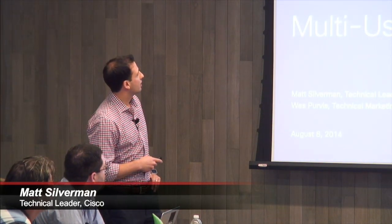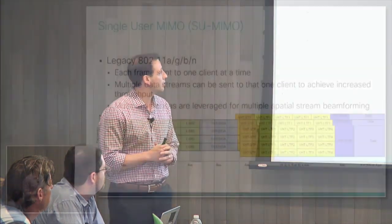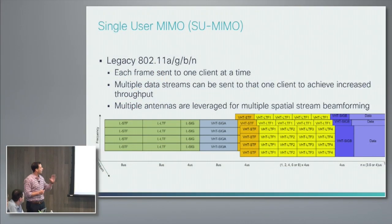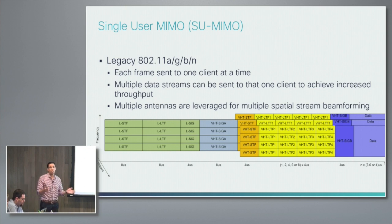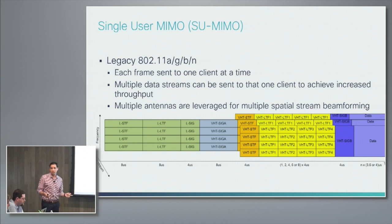Let's give a little review of single-user MIMO. That's a legacy type of communication system that's been in 802.11 since A/B/G. In any given frame you're sending, you're sending the data to a single client. Starting with 11n, there was the capability to send multiple spatial streams — purely a play on delivering higher capacity and higher throughput to a single client.